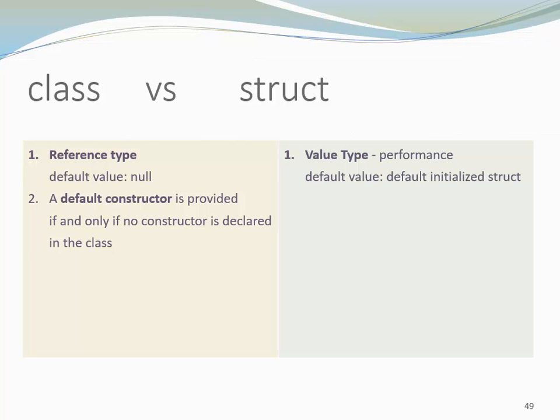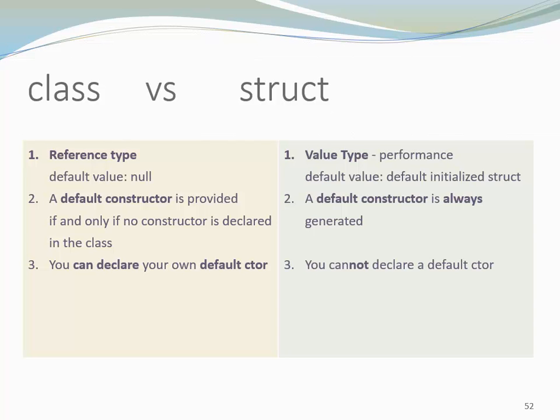In classes a default constructor is provided if and only if no constructor is declared. In structs a default constructor is always generated. In classes you can declare your own default constructor. This is not possible in structs. Writing a parameterless default constructor in a struct would lead to an error.